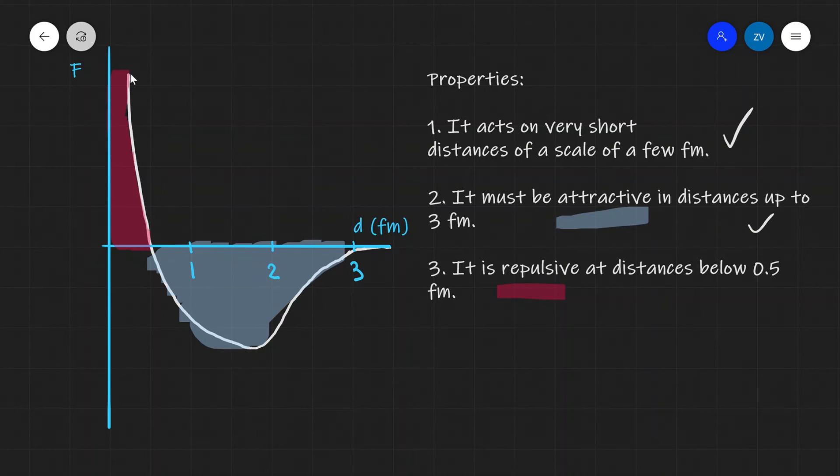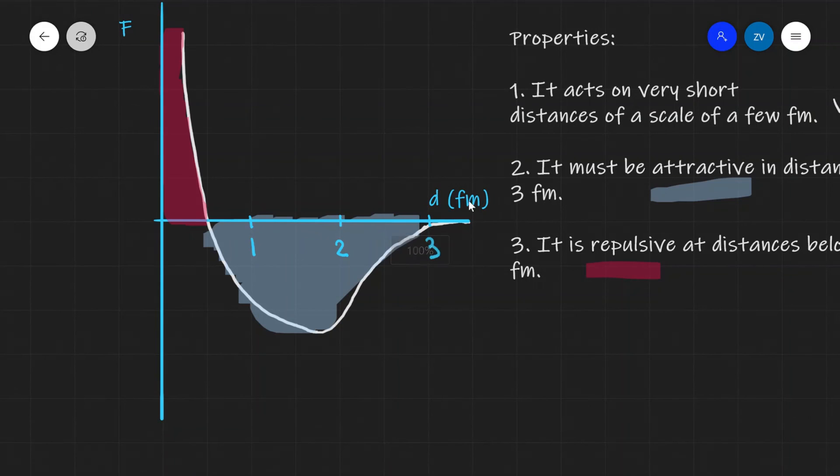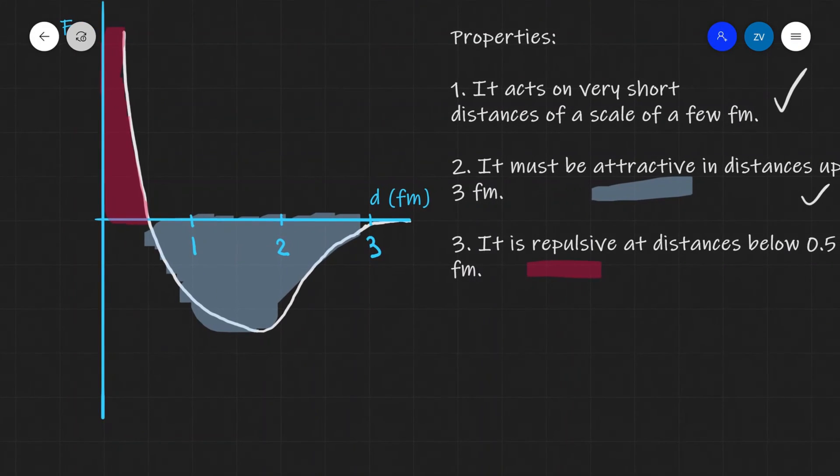Notice another interesting fact of the properties of the strong nuclear force. So, once again, at very, very, very small distances, below half a femtometer, the force is repulsive. So, just here. Then, as we get a little bit further away, so between half a femtometer and 3 femtometers, the force is attractive. So, that is gluing the nucleus together. Then, the force essentially is tending towards 0 for distances higher than 3 femtometers.